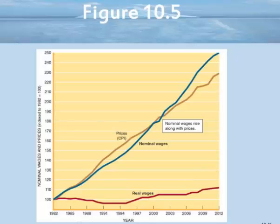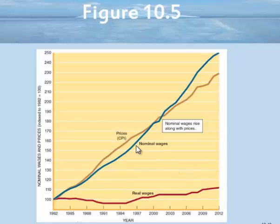When we speak about a real wage, we're saying that we have extracted out the inflation. Look at this diagram here. The blue line is the nominal wage, and when it is above the inflation price, then what we have is an increase in the real wage. You can see down here on the red line, it's going up. But look at when the blue line — the nominal wage — is below inflation: the real wage has gone down.